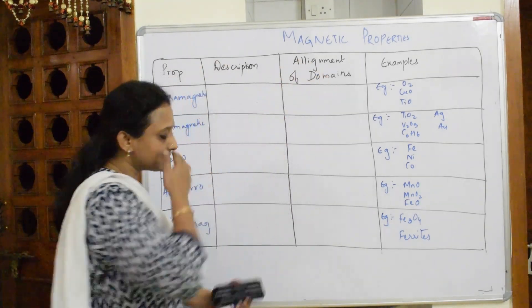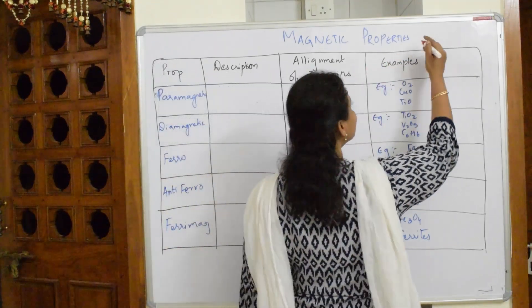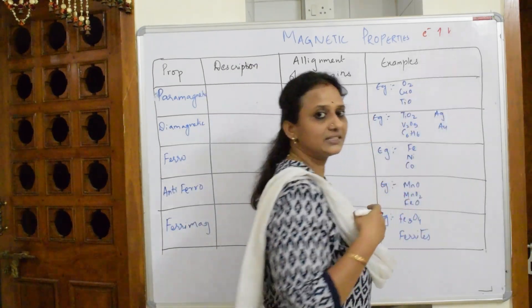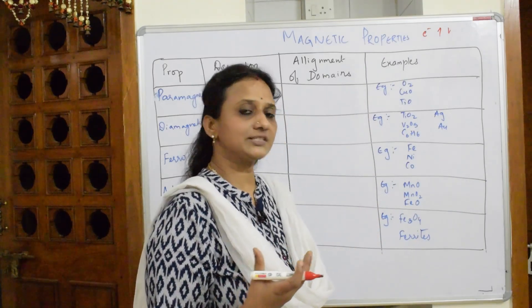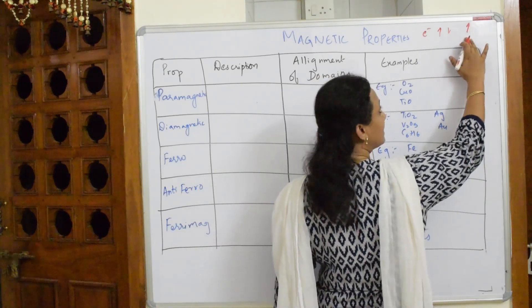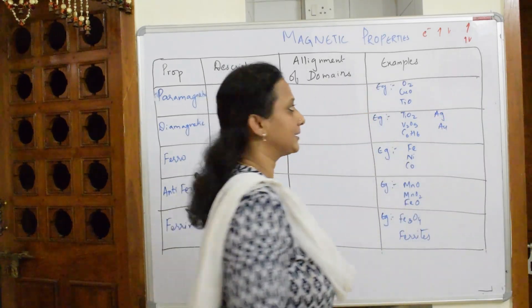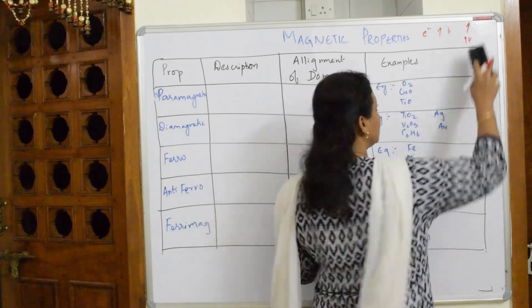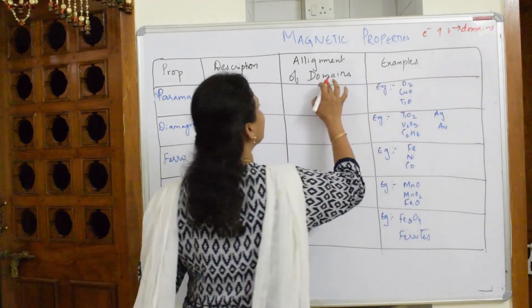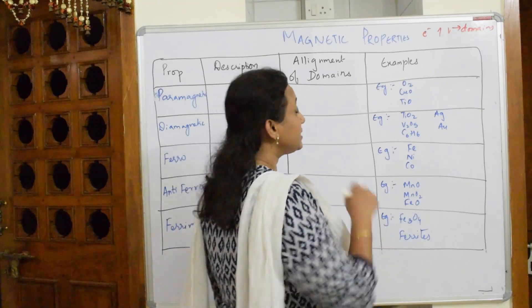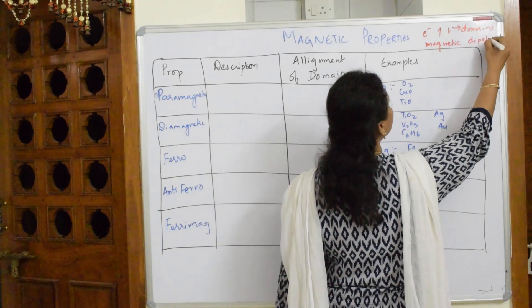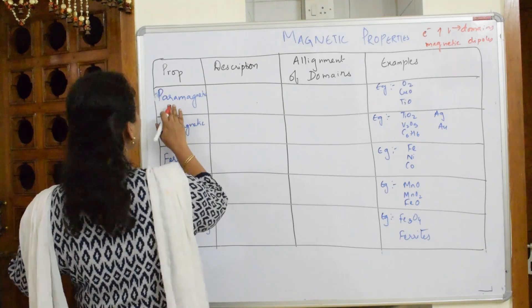When I speak about domains: when I take a particular metal, electrons have opposite spins. If they are aligning together we call them paired; if there is a single electron it is unpaired. These paired or unpaired electrons I call domains. I may also use the word magnetic dipoles — both are the same, don't get confused. Magnetic dipoles and domains are the same thing.